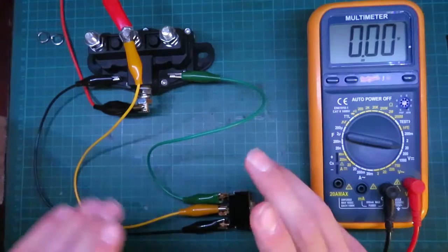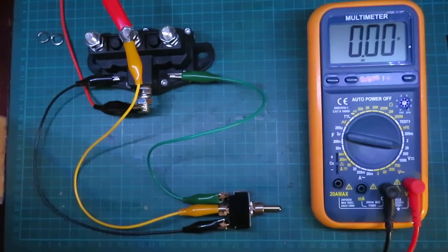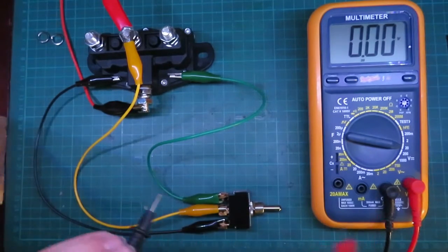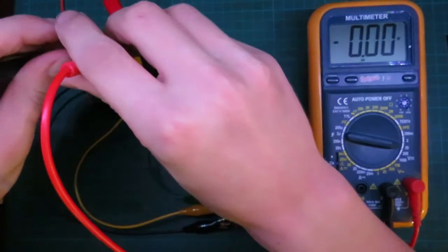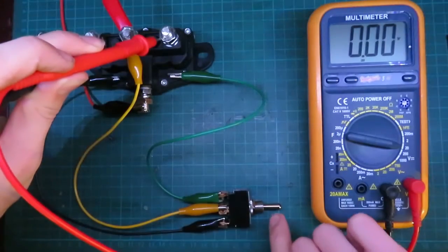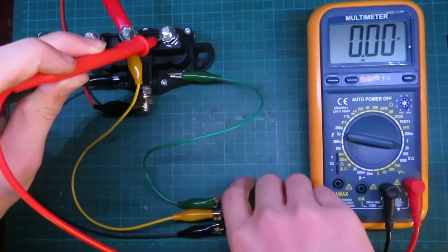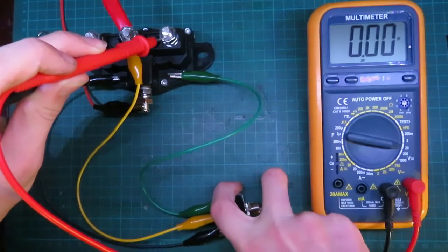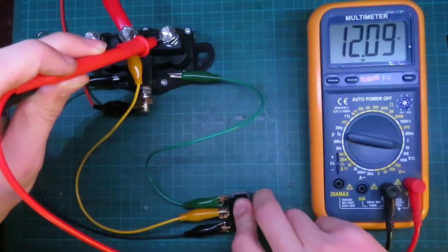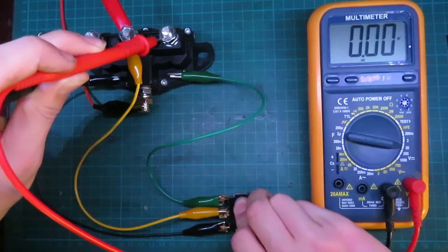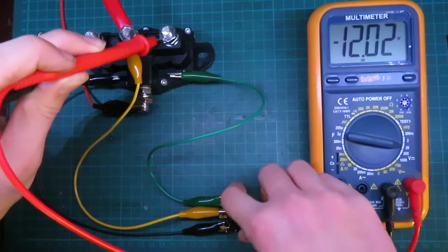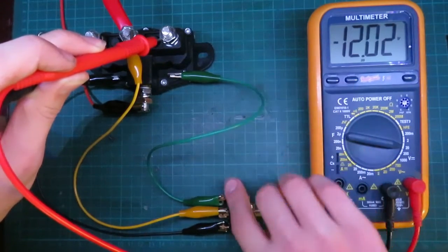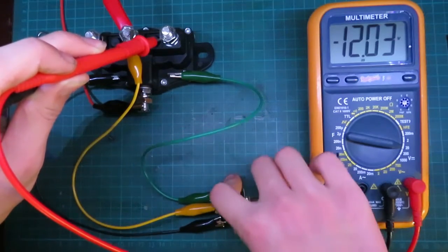Alright, so I have this all wired up here like our diagram. Right now, with our rocker switch in the middle position here, we have zero volts. We flip it the one way, and we get 12 volts. We flip it the other way, and we get 12 volts. This is actually minus 12 volts, so the polarity has reversed. Very good.